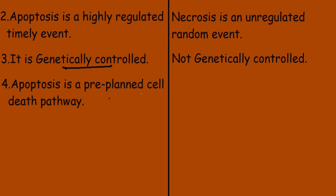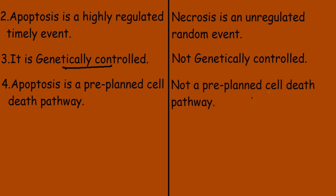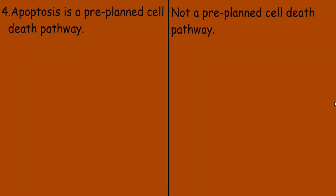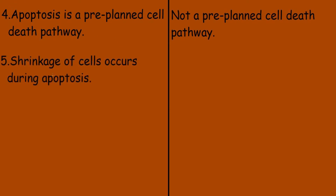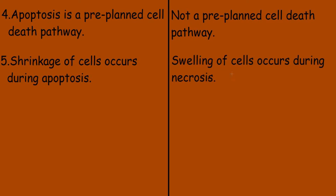Fourth, apoptosis is a pre-planned cell death pathway, while necrosis is not a pre-planned cell death pathway. Fifth, shrinkage of cells occurs during apoptosis, while swelling of cells occurs during necrosis.